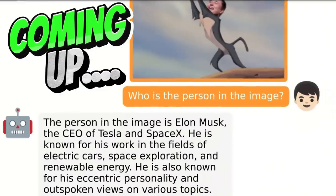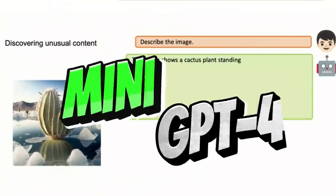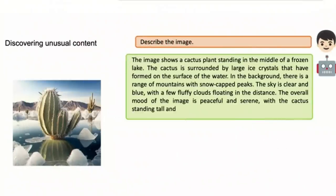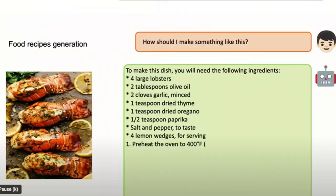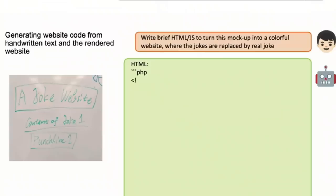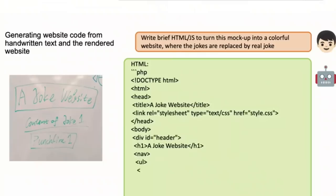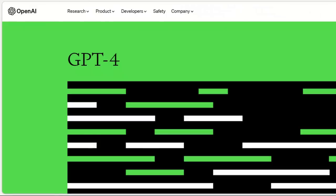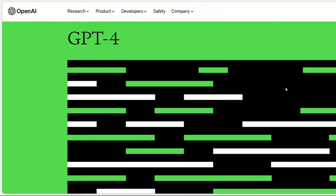He is also known for his eccentric personality and his outspoken views on various topics. Mini GPT-4 is an open source project that can understand images, generate recipes for images, identify problems in the images, and give potential solutions, and even create working code for websites just from an image. We can do all this for absolutely free. These are all the features that GPT-4 is supposed to have, but we are still waiting for OpenAI to release these features.